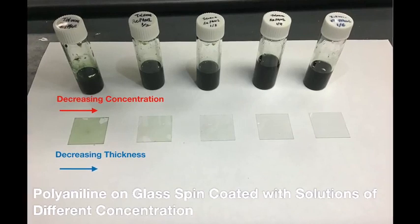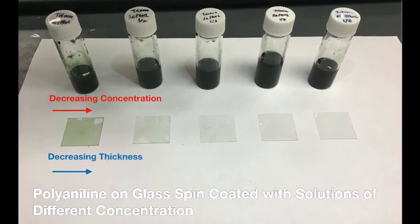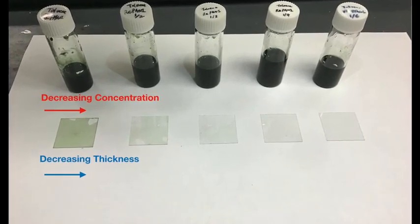We can control the thickness of films by changing the concentration of polyaniline solutions in spin coating.